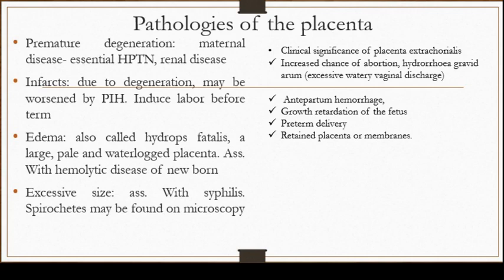Another complication we see is infarcts, largely due to degeneration of the placenta. In severe cases, degeneration may be worsened by pregnancy-induced hypertension or pre-eclampsia, because pre-eclampsia causes arterial spasm, resulting in large infarcted areas. This leads to placental insufficiency, and it is recommended that labor be induced before term to prevent further deterioration of fetal life.